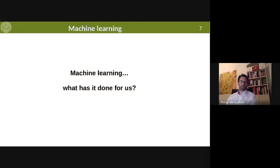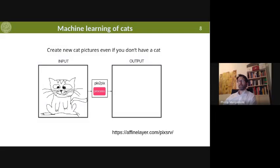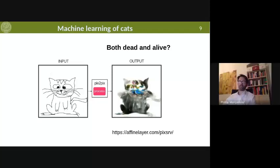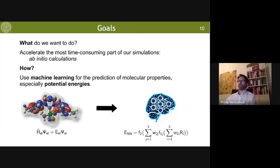So you can ask yourself: machine learning — what has that done for us? Probably you have heard a lot about machine learning in the media. For example, it can create new cat pictures on the internet, which is very important to humanity. Even if you do not have a cat, you can basically draw a cat yourself and the machine learning creates a nice cat from your drawing. Speaking of dead and alive cats, you immediately come to machine learning for quantum chemistry.